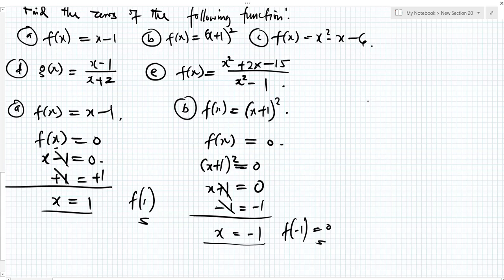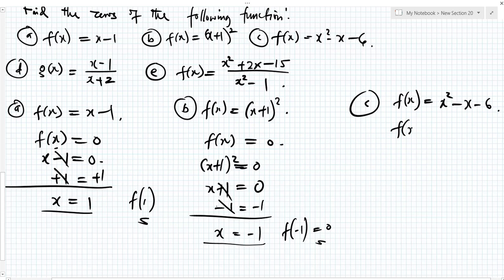For c, you have f of x equal to x squared minus x minus 6. The zeros of this is when f of x is equal to 0. So that means x squared minus x minus 6 is equal to 0. I will use the factorization method to solve this.